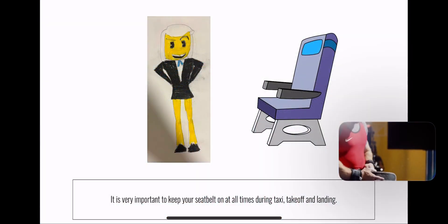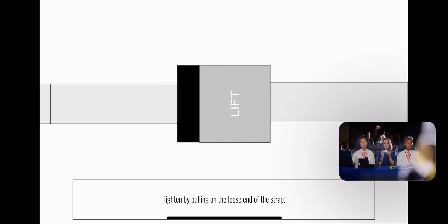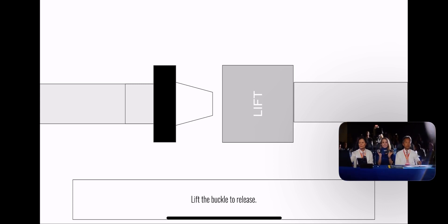It's important to have your seatbelt on at all times. To fasten your seatbelt, slide the metal ends into the buckle, tighten by pulling the loose end of the strap. Lift the buckle to release.